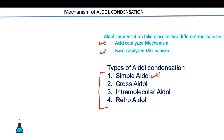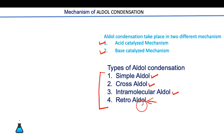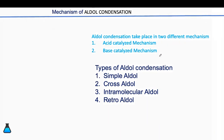There are four different types of aldol condensation. One is simple aldol condensation, when two similar carbonyl compounds react. Second is cross aldol, when two dissimilar carbonyl compounds react. Third is intramolecular, when a single molecule consists of two carbonyl groups. Fourth is retro-aldol condensation, which is the backward reaction of an aldol. I will explain the mechanism of all four.